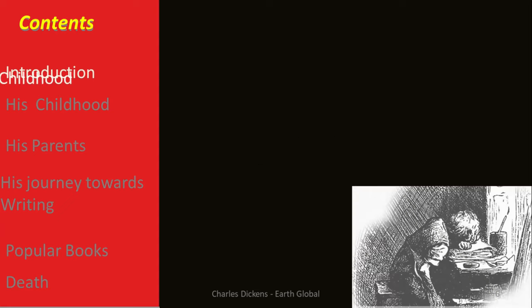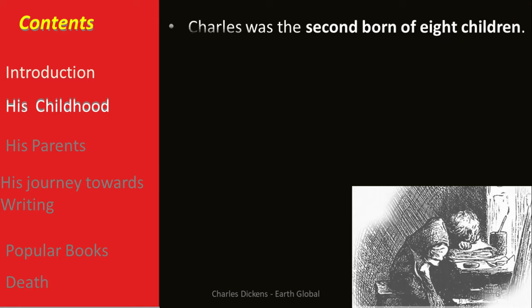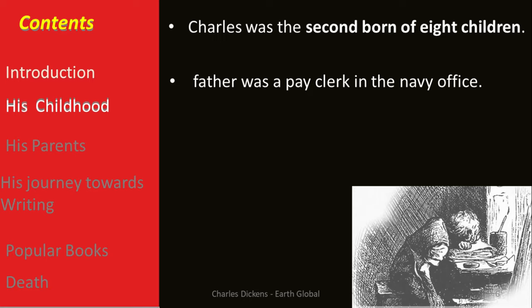Talking about his childhood, Charles had to undergo various difficulties, challenges, and obstacles. Nevertheless, because of his courage, he became a writer loved by millions of children. Charles Dickens was the second child born out of eight children in the family.